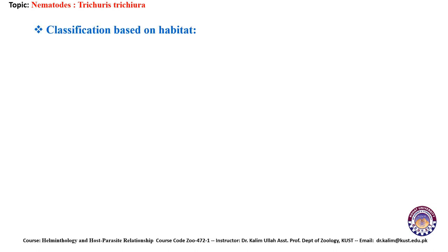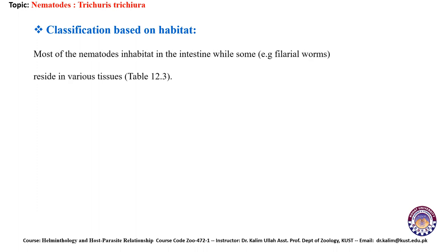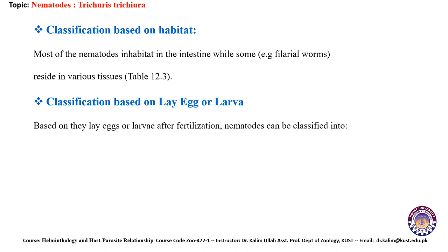Next is classification based on habitat. Most nematode larvae inhabit the intestine, while some, like filarial worms, reside in various tissues, as given in Table 12.3. Based on whether they lay eggs or larvae after fertilization, nematodes can be classified into oviparous, viviparous, and ovoviviparous.